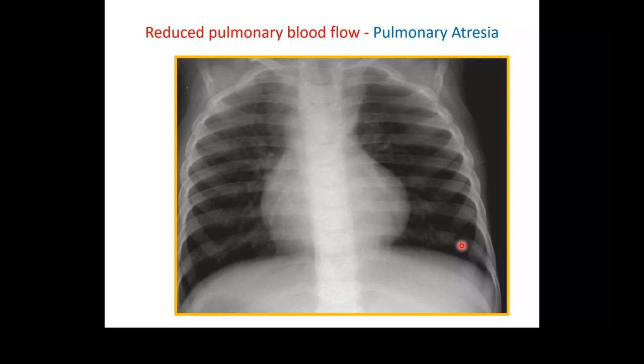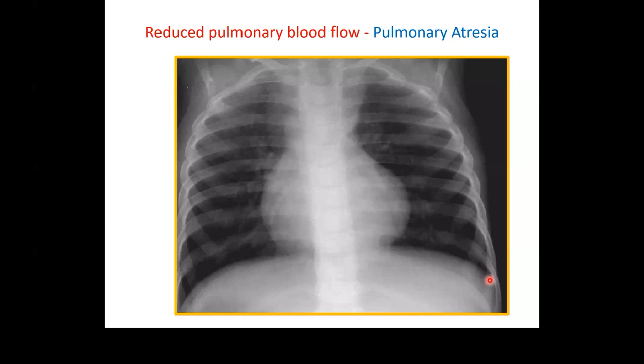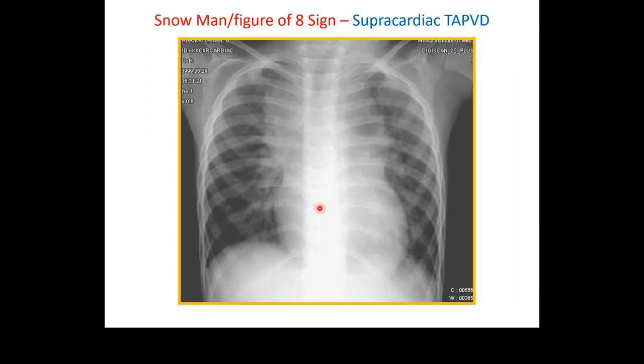Reduced pulmonary blood flow — in pulmonary atresia, the lung fields are very black because there is little blood going into the lungs. If a baby is born with low saturation and you see oligemic lung fields on chest X-ray, suspect a duct-dependent pulmonary circulation, and this is an indication to commence prostaglandin. The figure-of-eight or snowman appearance on chest X-ray is the typical feature seen in supracardiac total anomalous pulmonary venous drainage (TAPVD).